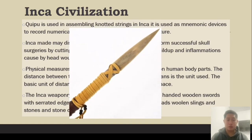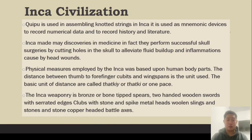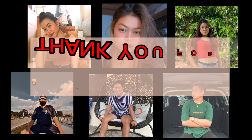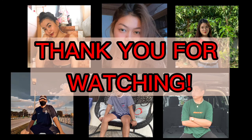Inca weaponry included bronze or bone-tipped spears, wooden swords with serrated edges, clubs with stone and spiked metal heads, woolen slings and stones, and stone or copper-headed battle axes. That's it — thank you for watching, and I hope you learned something. Bye!